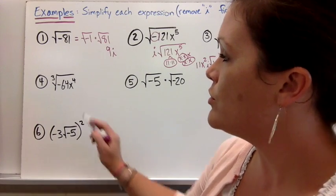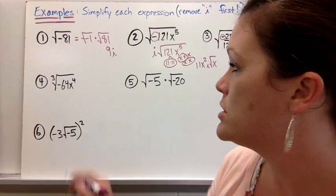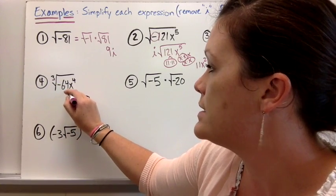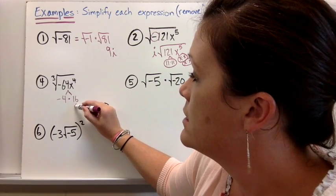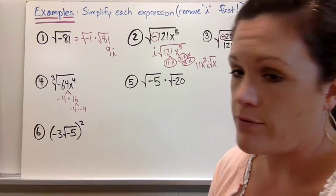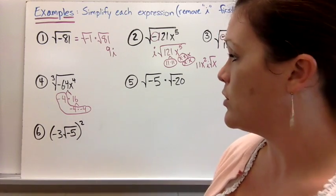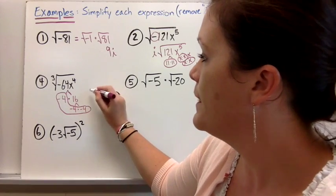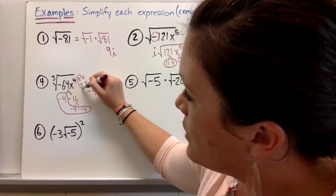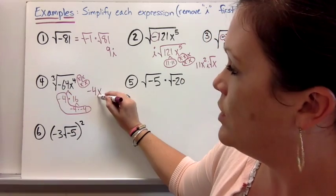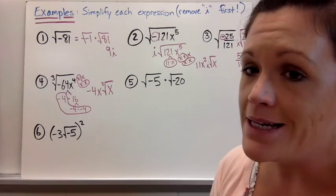For number four, the cube root of a negative: the cube root of a negative is possible. The square root of a negative was not possible until we introduced complex numbers, but the cube root of a negative works out. Negative 64 comes from negative 4 times negative 4 times negative 4, which does give negative 64. So the cube root of negative 64 is negative 4 — I don't need an i for that. There are four x's and I need a group of three for the cube root, so I take out one x and have the cube root of x left over. I did not need i for that problem.